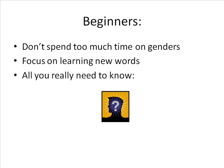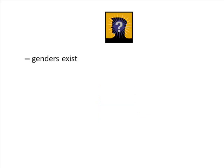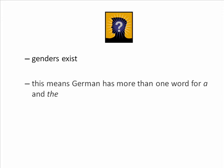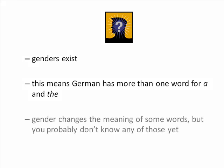The main thing you need to know about gender is that it exists in German, and this means that German has more than one word for 'the' and 'a'. In most circumstances, German speakers will understand you whether you've got the gender right or not, and the chances are that you haven't yet learnt any of the words where the gender changes the meaning so that getting it wrong means you won't be understood correctly. These tend not to come up at a beginner's level.